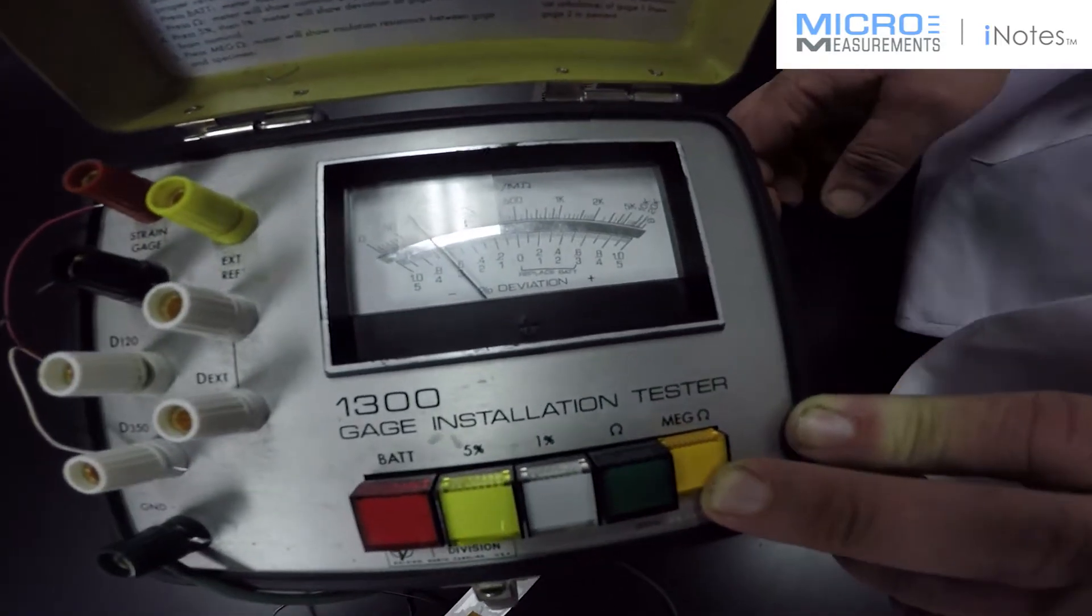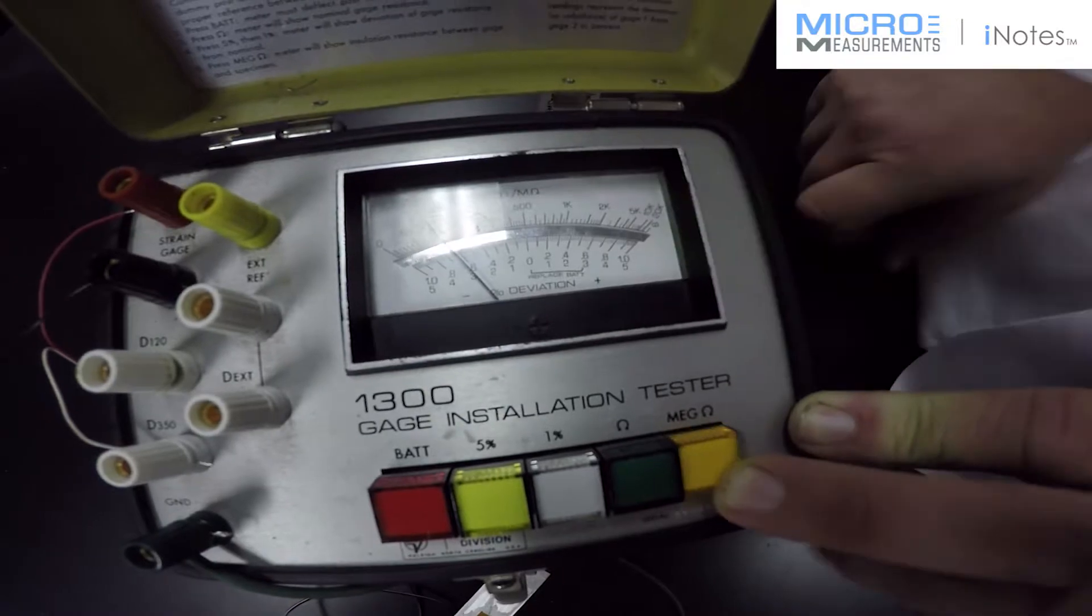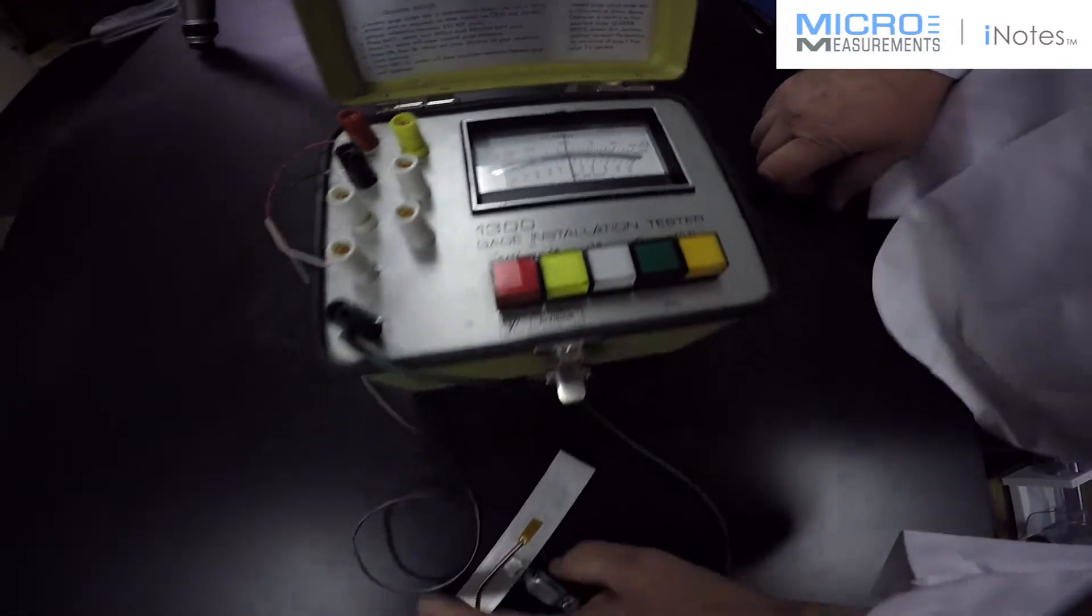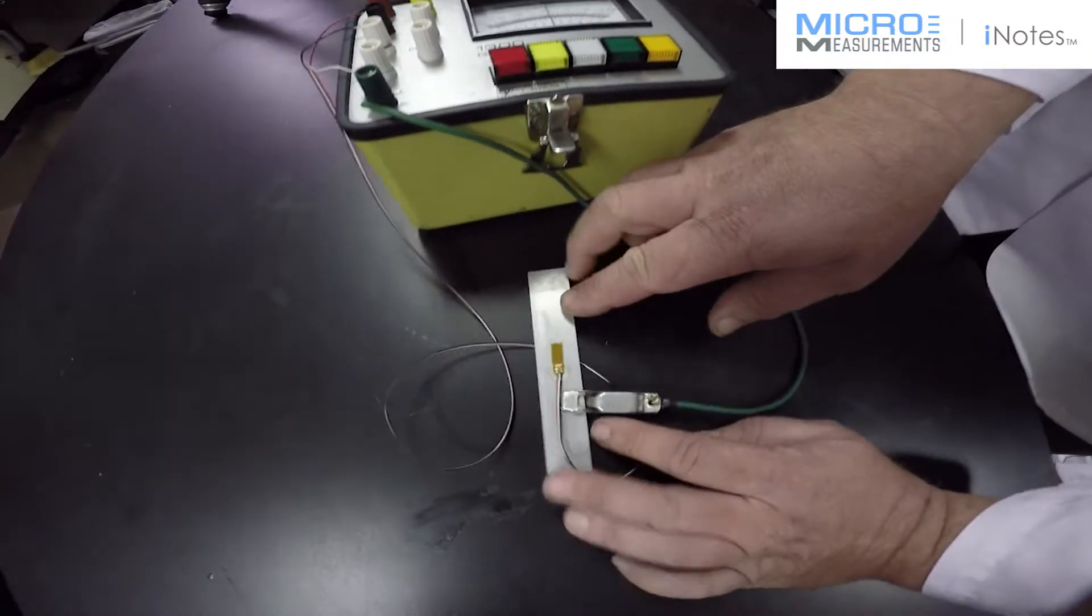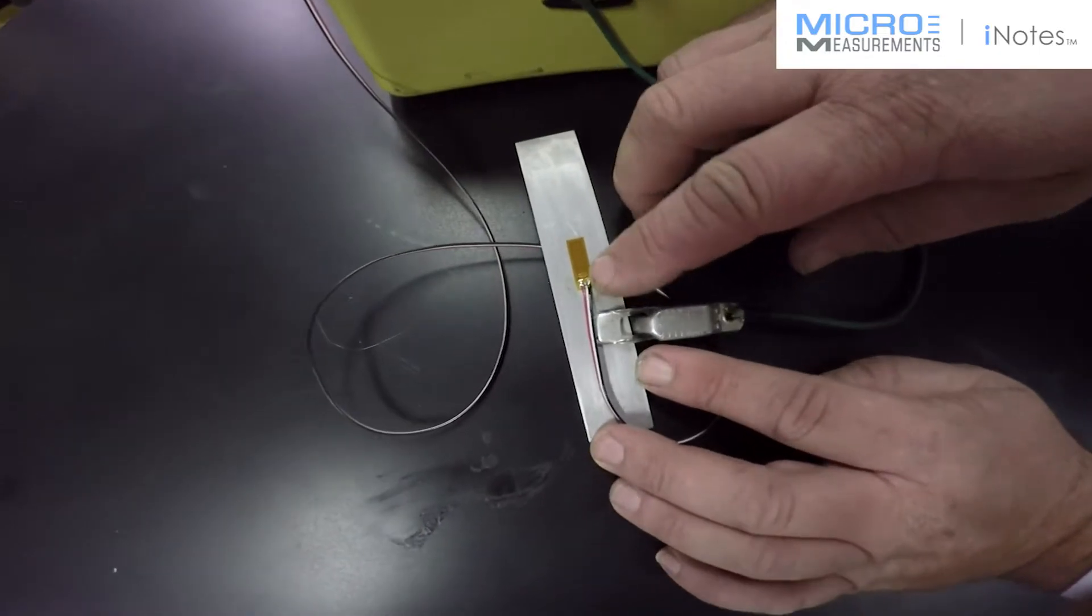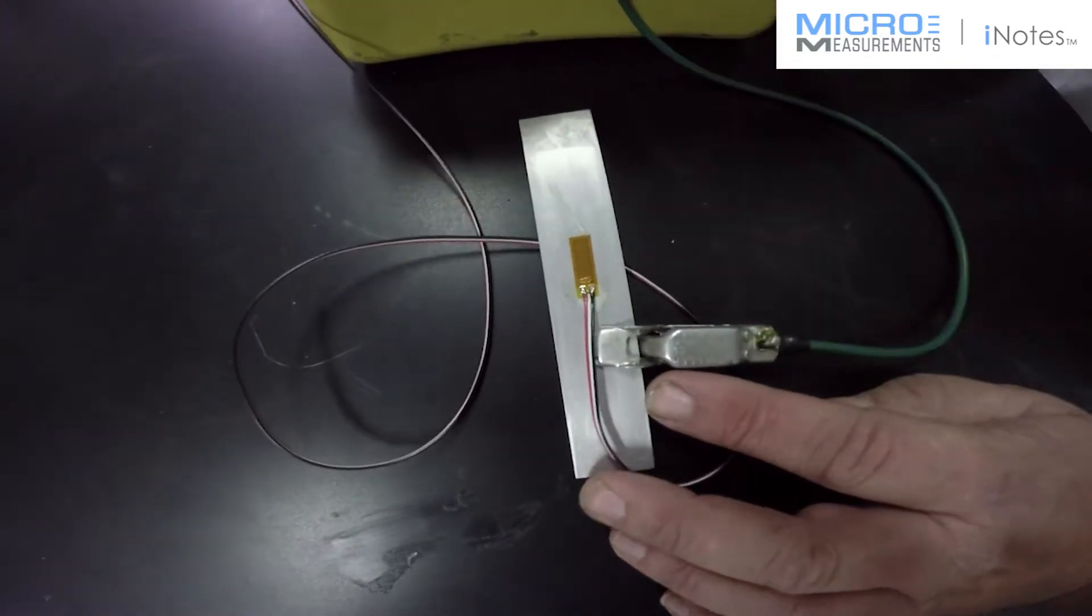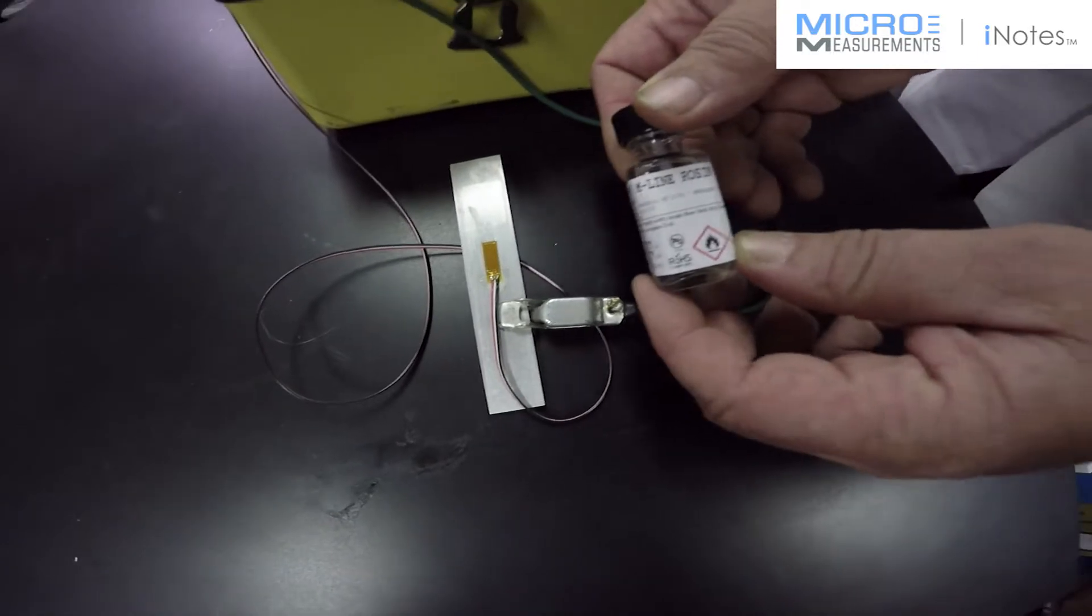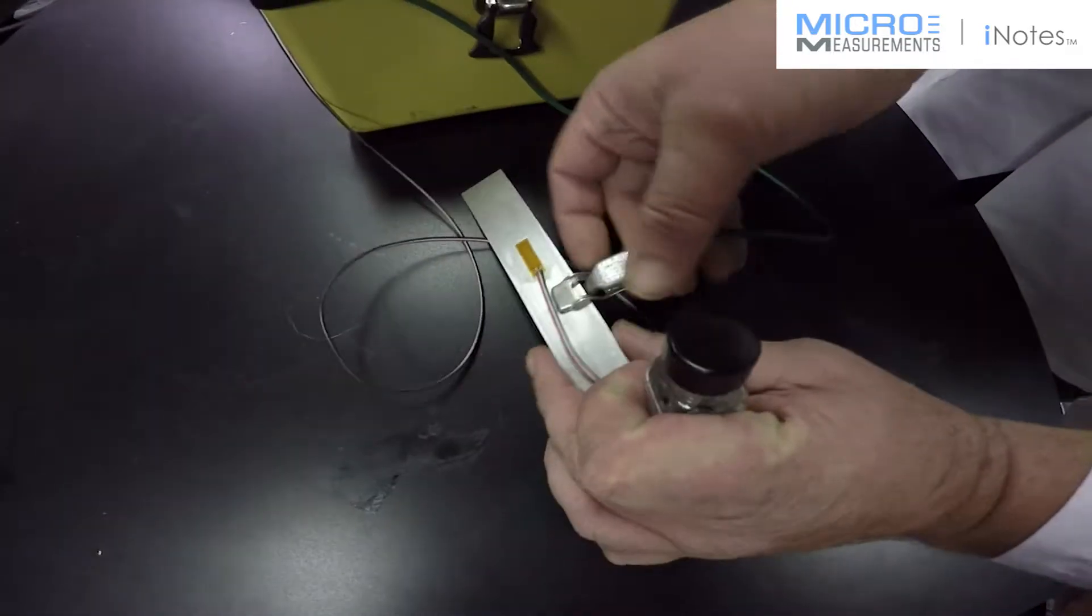So the problem that you typically have when you have a low resistance to ground is flux. And in fact, I have left the flux on here. After soldering, I did not go back and use the micromeasurements rosin solvent to clean that up. So let's go ahead and clean this up a little bit and we'll see what difference that makes.